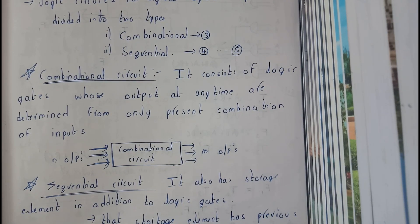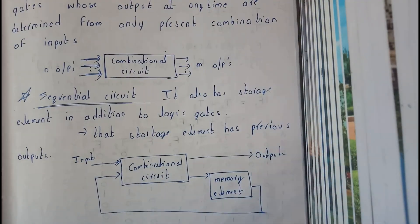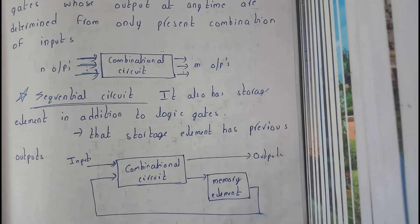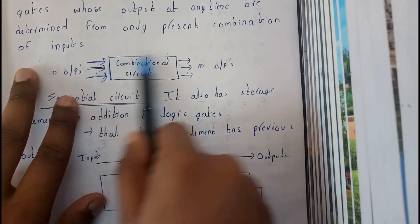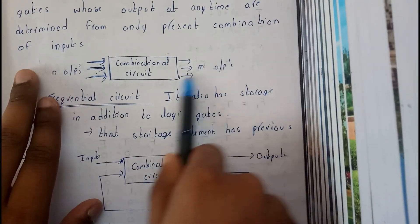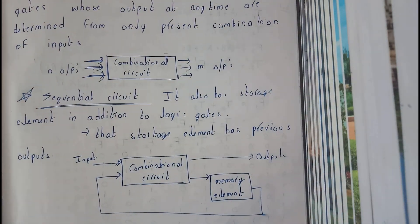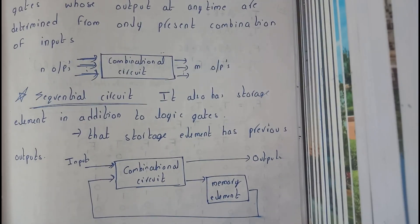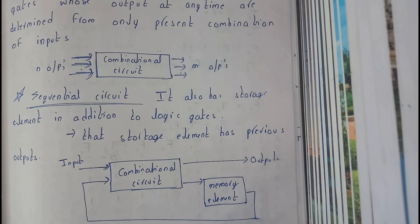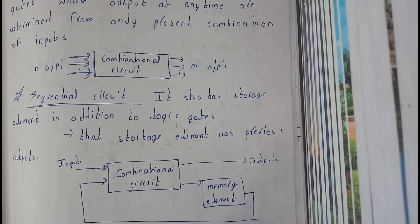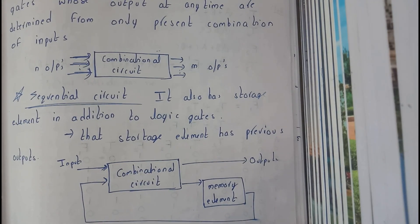Now let us go through the sequential circuit. But first, to recap: a combinational circuit works like this — if you give n inputs, it is going to give m outputs. It completely depends on the present input. That is the main thing you should remember about combinational circuits.